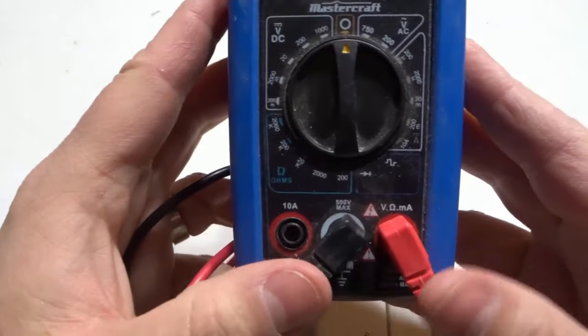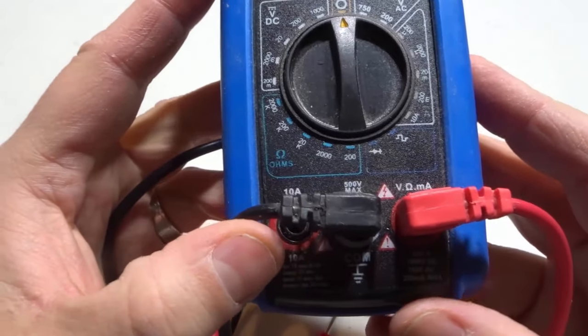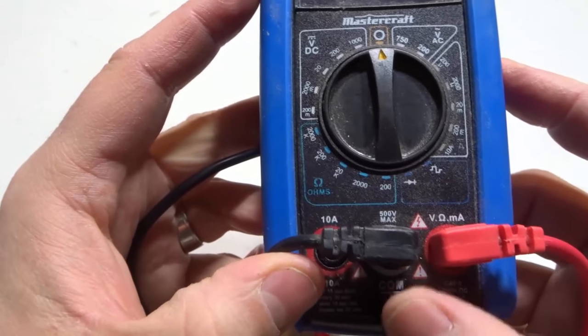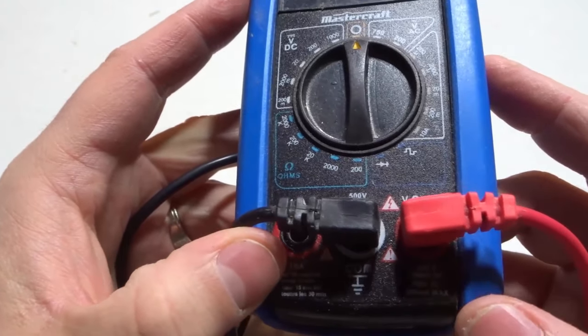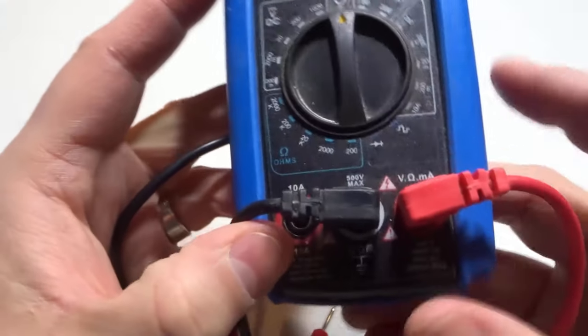First and foremost you want to make sure that the probes are plugged into the correct ports. As you can see right here, the black one is plugged into the common which has COM over there, and the red one is plugged into this which has all sorts of different things that you can measure, but essentially you want to choose the one that has volts on it.